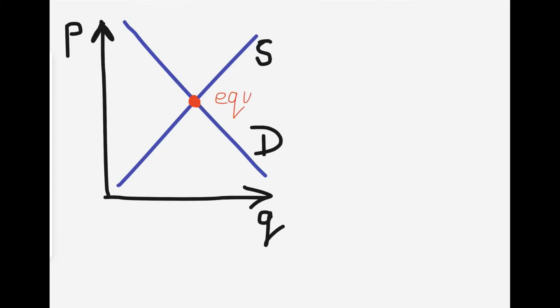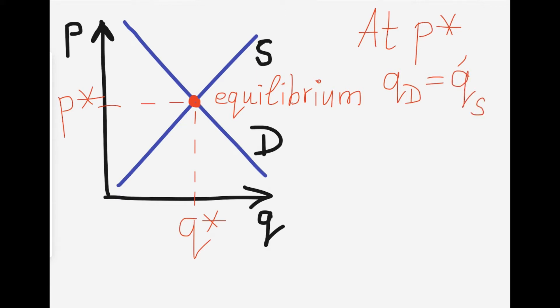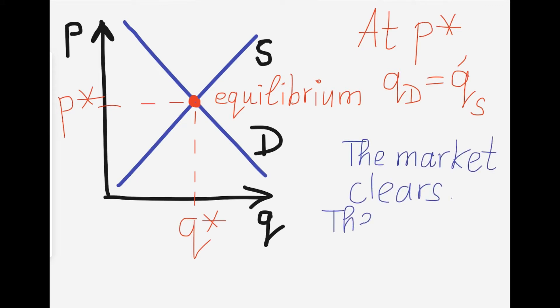Supply and demand have to intersect, and the point of intersection is called the market equilibrium. The market equilibrium has the equilibrium price and equilibrium quantity. At this price and this price only, the quantity that buyers want to buy equals the quantity that sellers want to sell — the quantity demanded equals the quantity supplied. The market clears and there are no shortages and no surpluses.